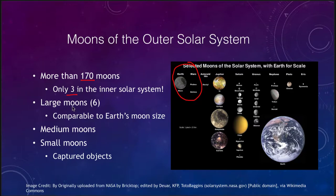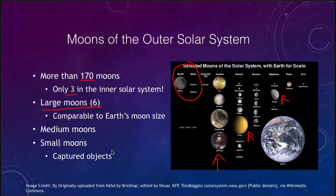In the outer solar system there are six large moons: four of them around Jupiter, one around Saturn — Titan — and one around Neptune — Triton. Those are the six large moons in the outer solar system that we're going to look at, and you can see from the scale diagram here that they are comparable to the Earth's moon in size.